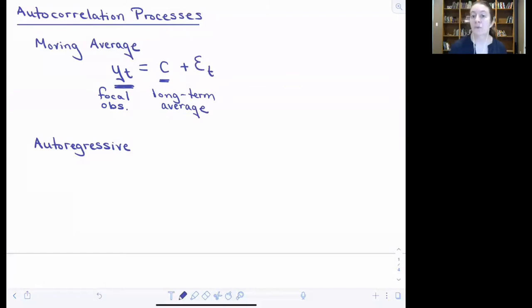plus the error at time t minus one. And so this is how that past influences the future. So you have a big disturbance in the past, it will tend to leave a signal pushing the value at time t away from that mean.